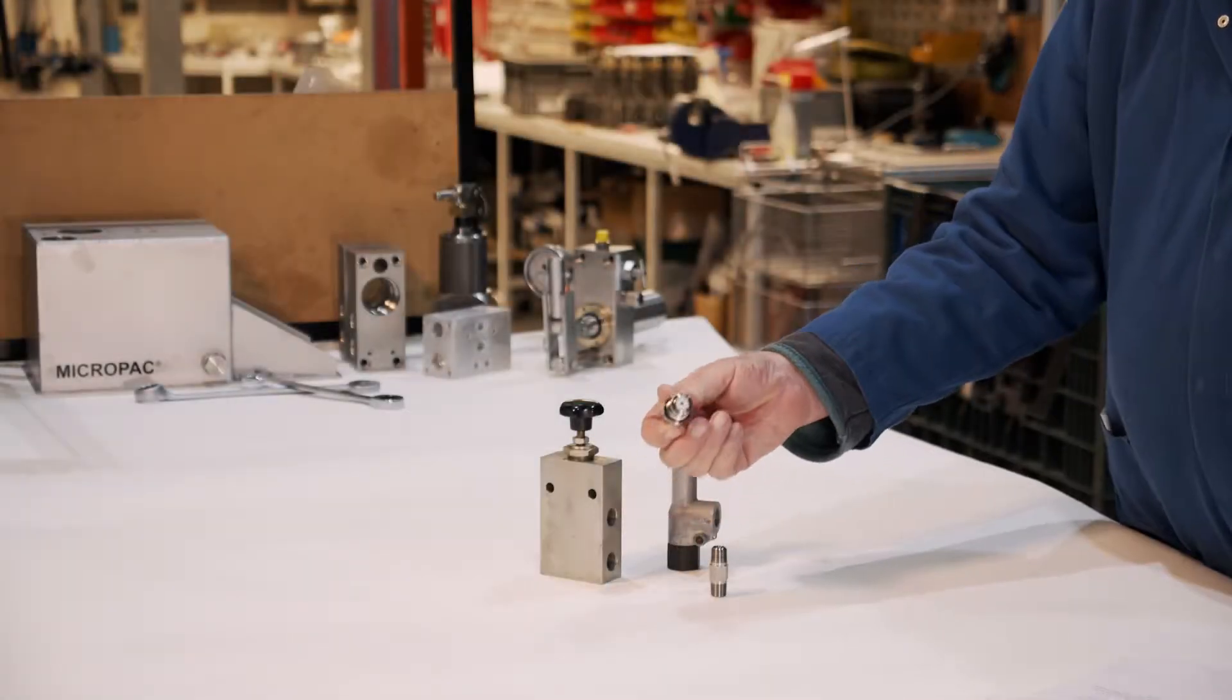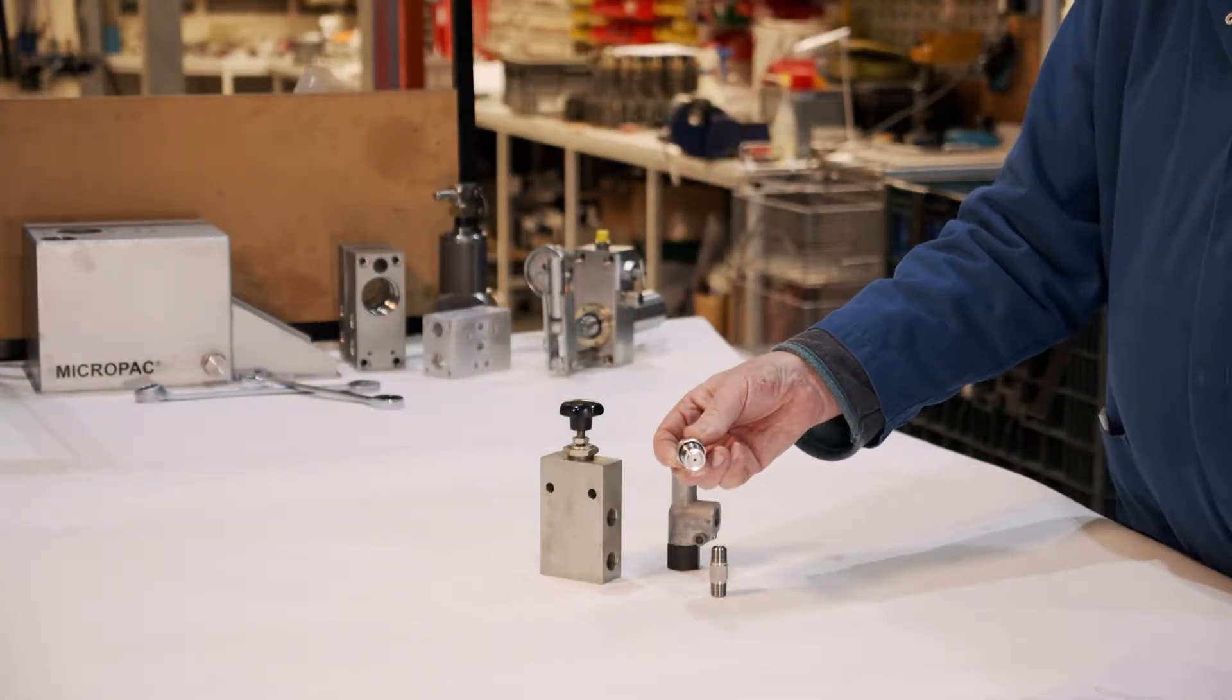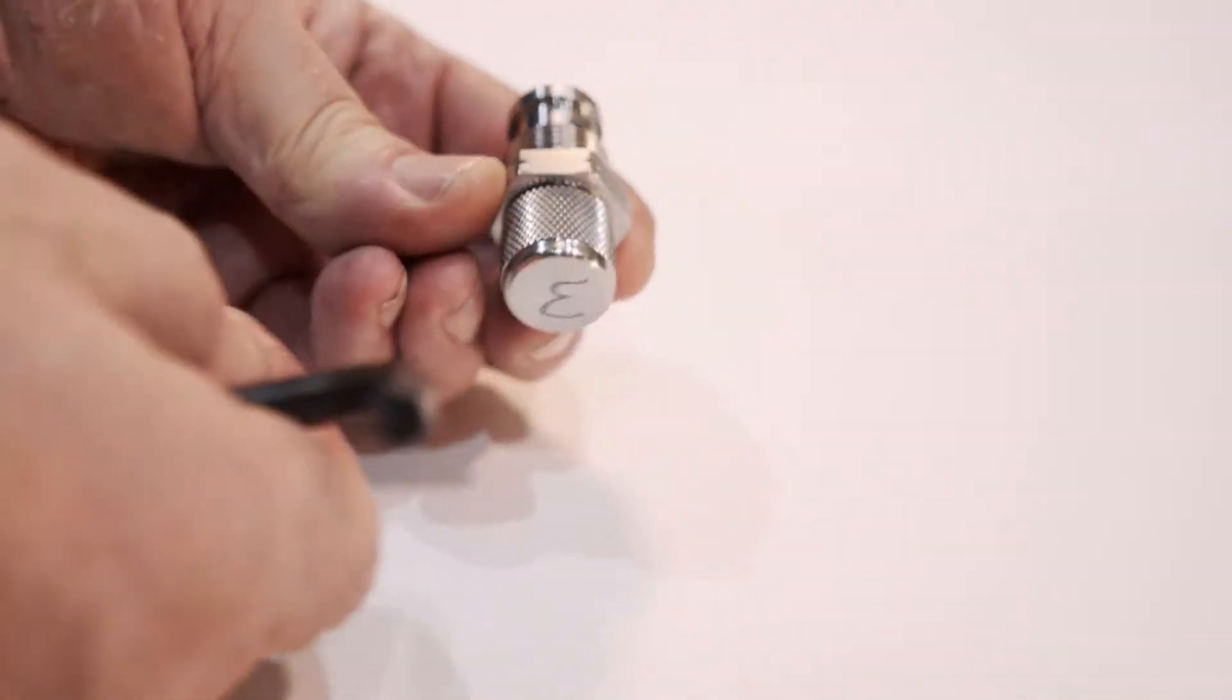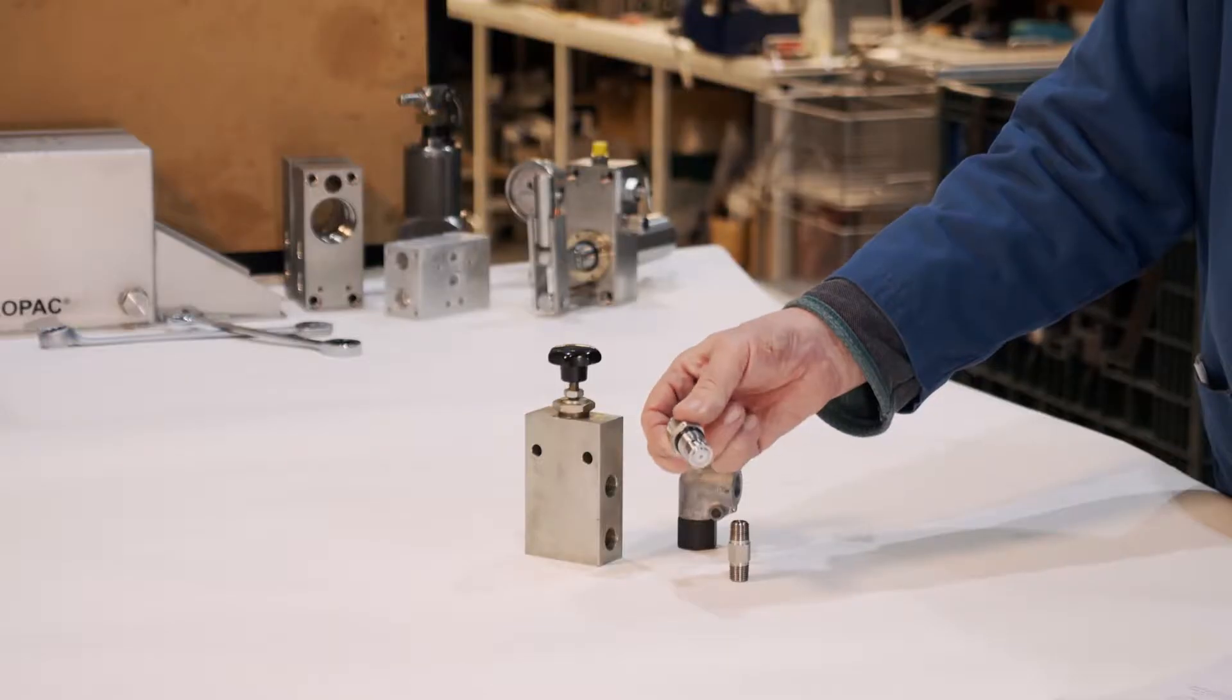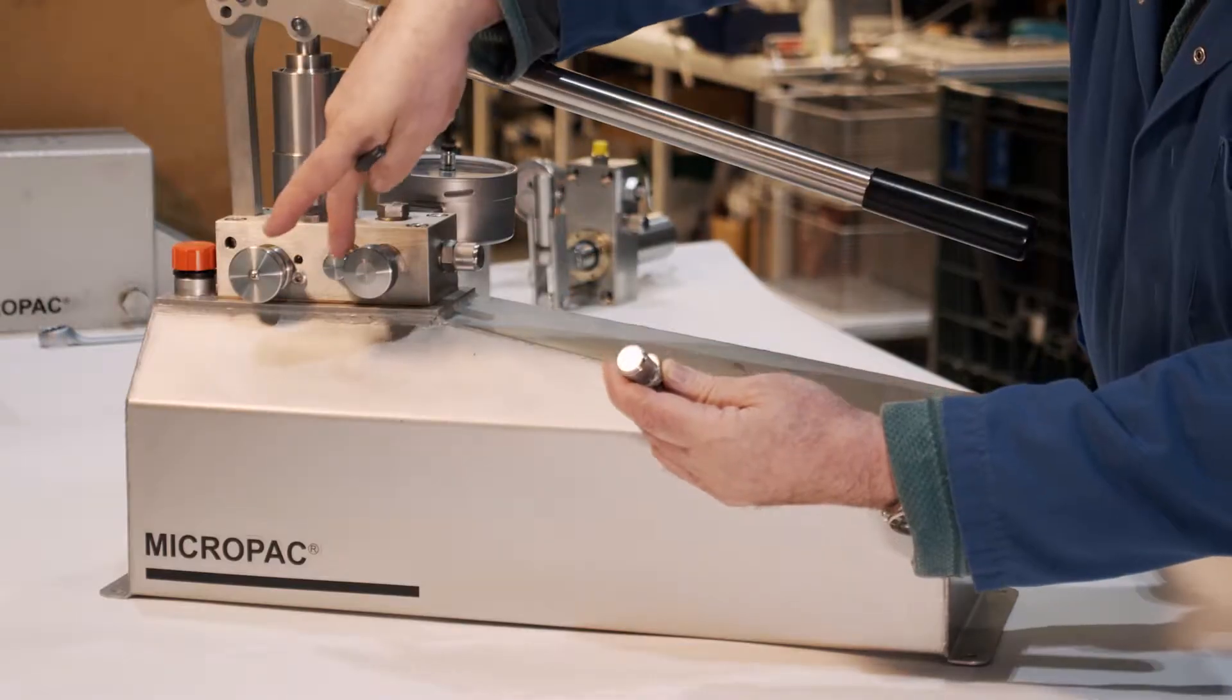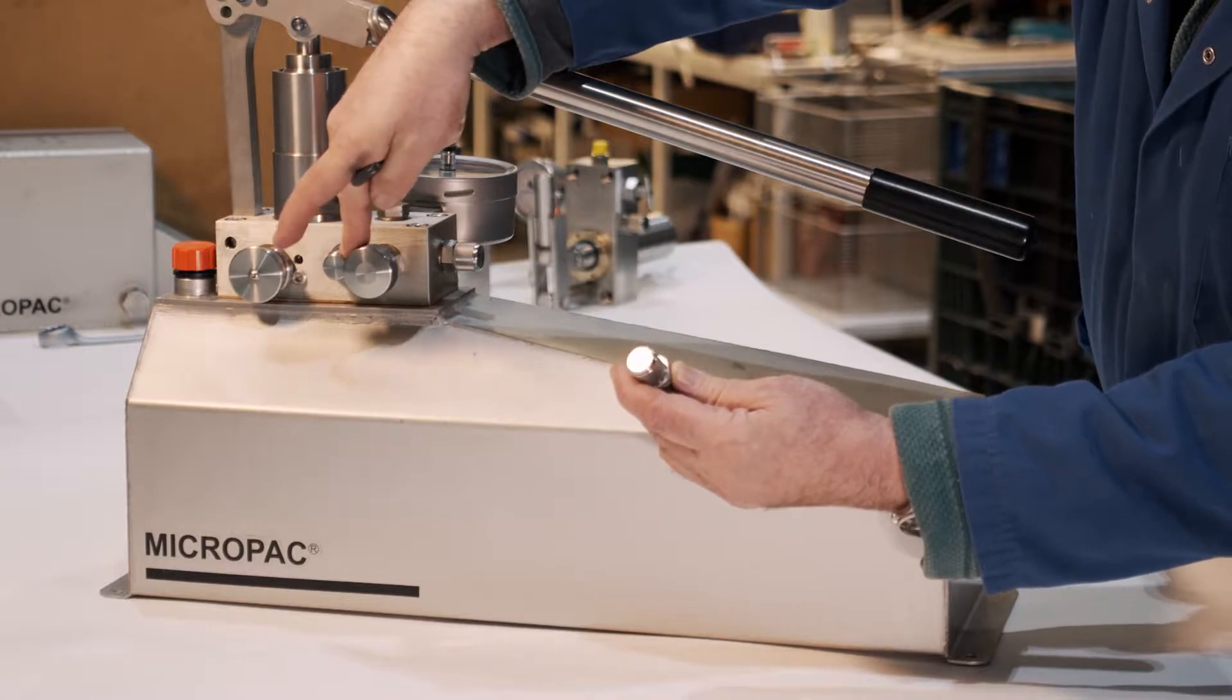I'm looking at this little cartridge relief valve that we fit into our Micropac pumps and I'm going to set it to meet my pressure requirements. This is a small direct acting relief valve that we use. Here's one fitted to our MD two-speed pump.